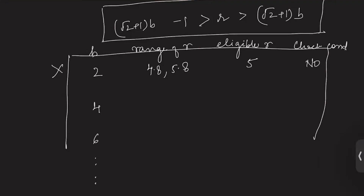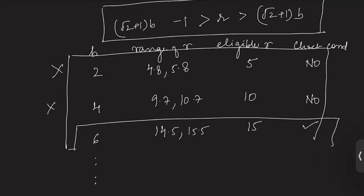For b equals to four, the range is 9.7 to 10.7, so the eligible r is 10, but the condition doesn't hold true — we reject this solution. For b equals to six, the range is 14.5 to 15.5, so the eligible r is 15, and the condition holds true. This is our solution for the second part: r equals to 15 and b equals to six, giving a total of 21 socks. Thank you.